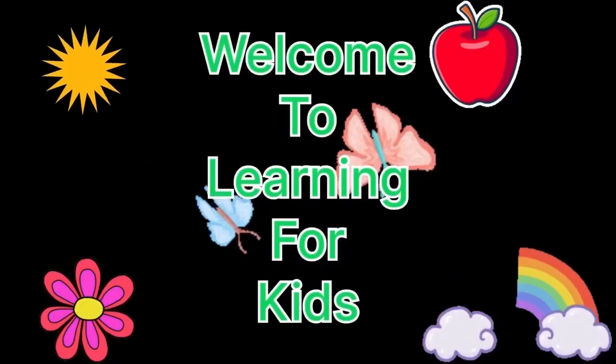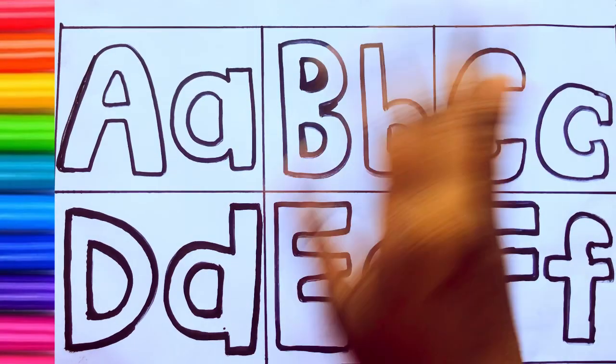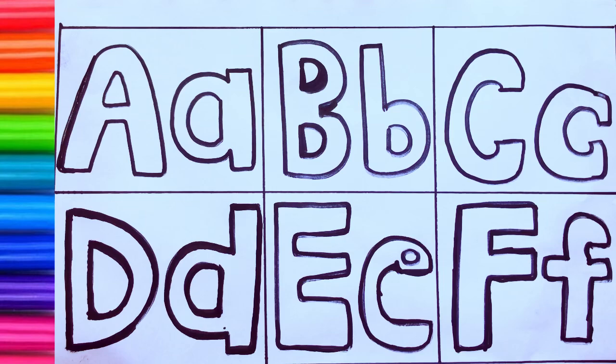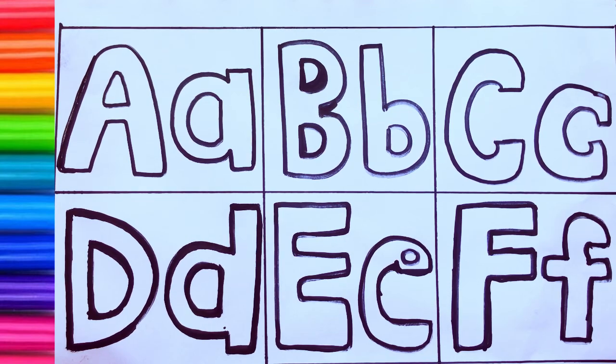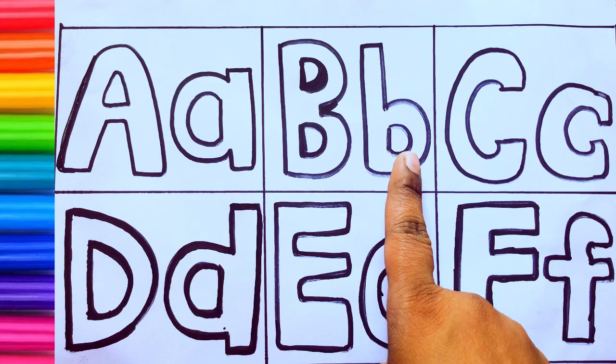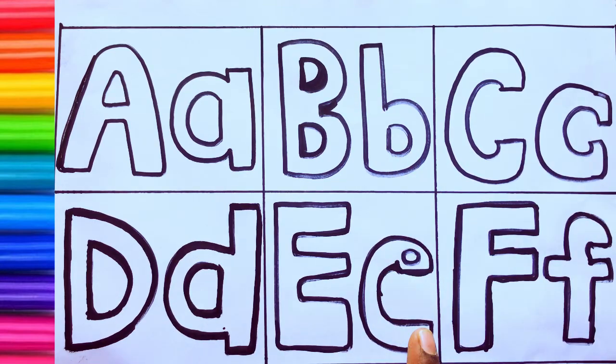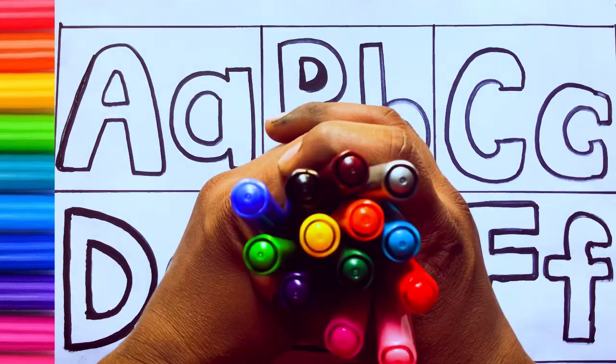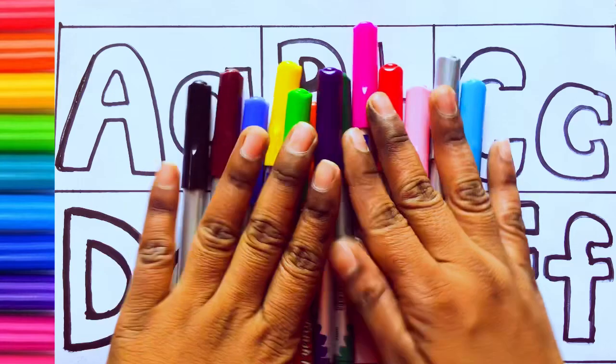Welcome to Learning for Kids. Hi kids, how are you? Welcome to our channel. Today we are going to learn capital alphabets and small alphabets: A, B, C, D, E. Yes, okay, let's say some colors. These are all the color pencils.